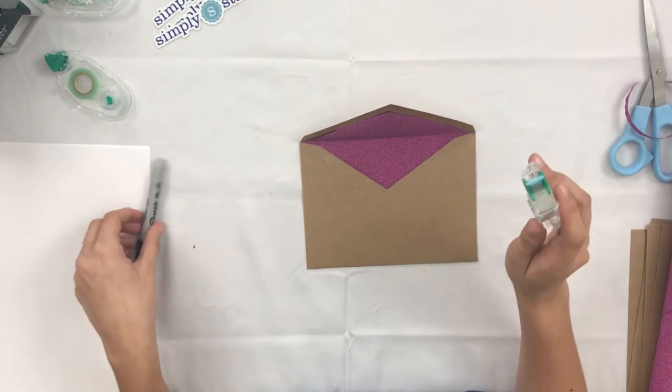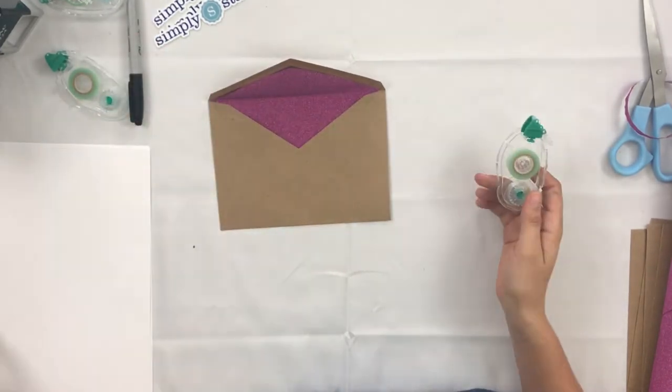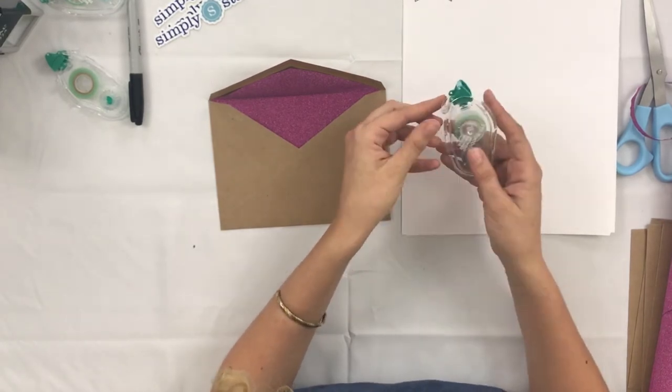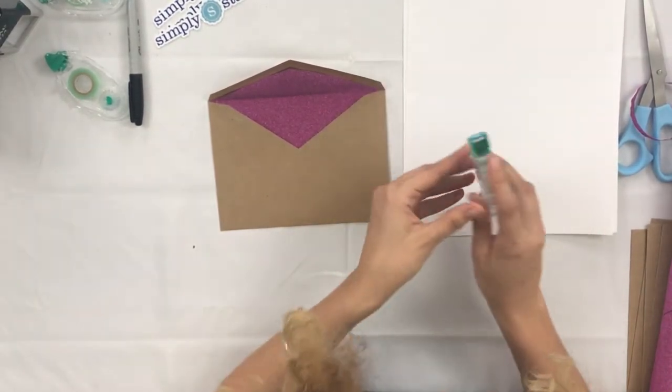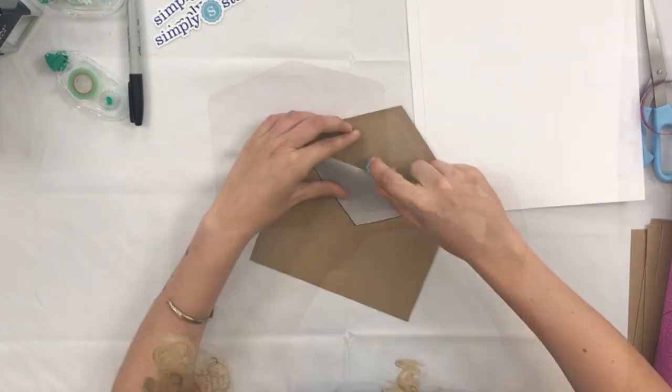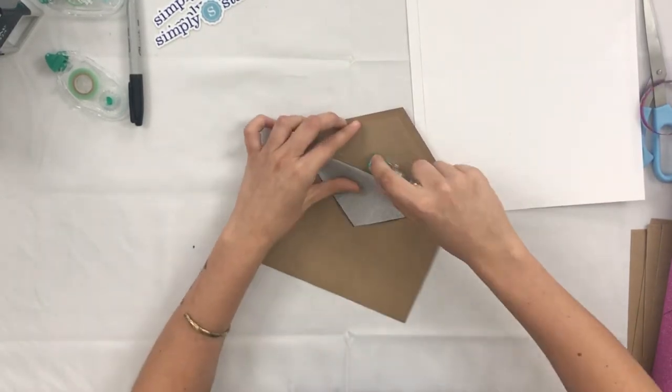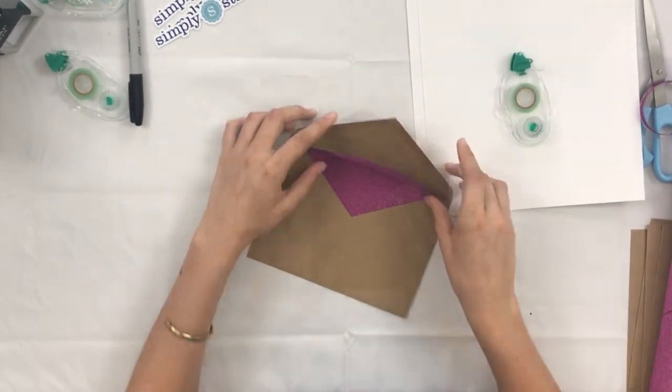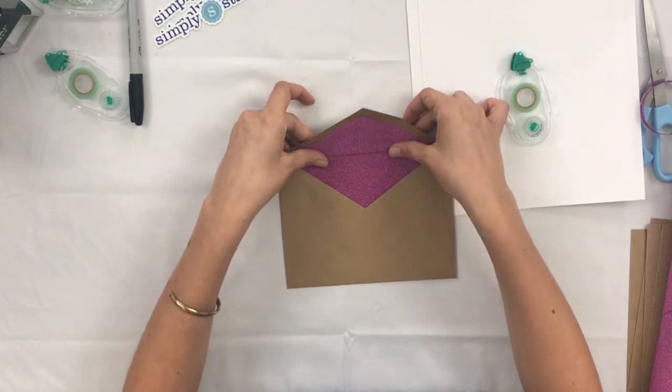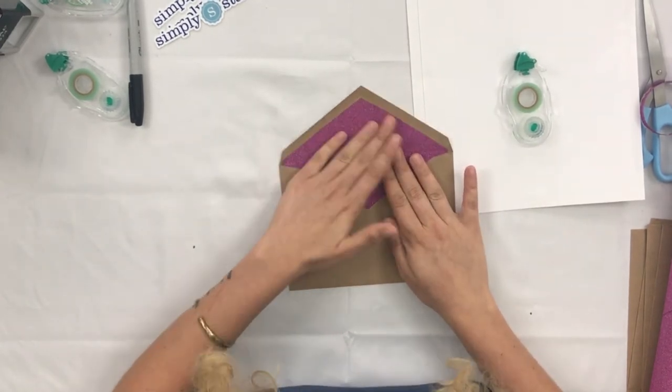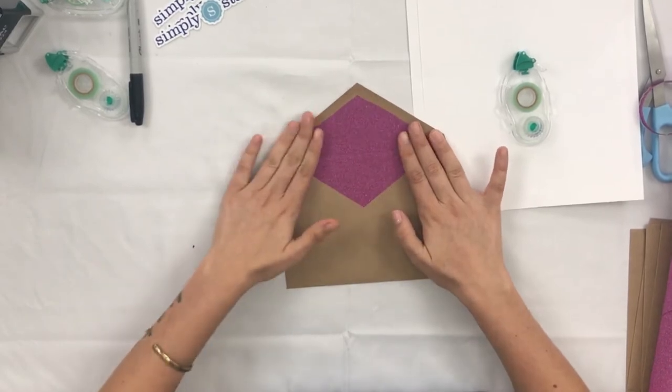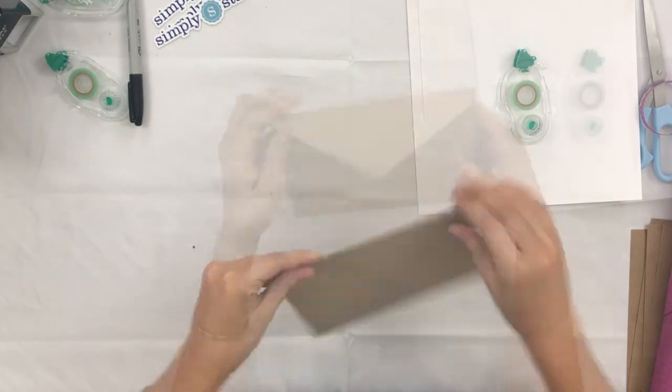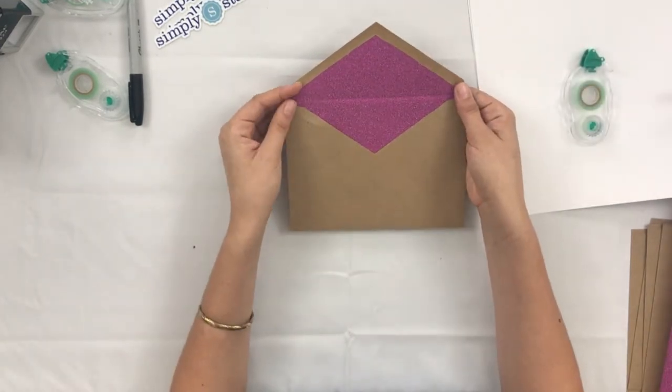And then you're going to take some adhesive. I like to test it out on a scrap piece of paper first to be sure that it is going to work the way I want it to. And then you're just going to press the wrapping paper against the adhesive. And now your envelope liner is complete.